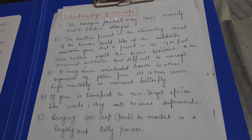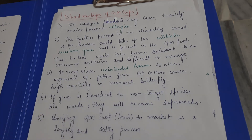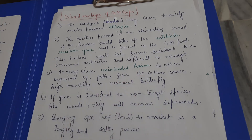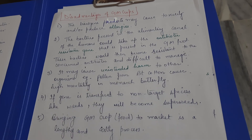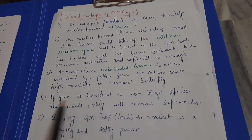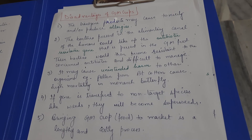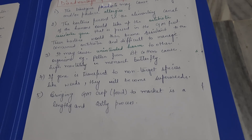GM crops can also harm non-target species — for example, pollen from Bt cotton has been reported to harm butterflies. If genes transfer to non-target species such as weeds, those weeds can become 'super weeds' that are difficult to control. Furthermore, developing and introducing GM crops to the market is a very costly process. These are the major advantages and disadvantages of GM crops.